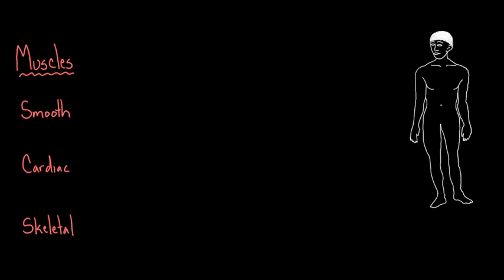Let's talk about muscles. I've drawn the human body on the right, kind of a figure of it, and I want to talk about the three major types of muscles. I thought it'd be helpful to have a picture so we can draw on there and show where the different types of muscles might be. When I mention muscles, the word I want you to start thinking about is movement — think about all the different types of movements that might happen in your body.